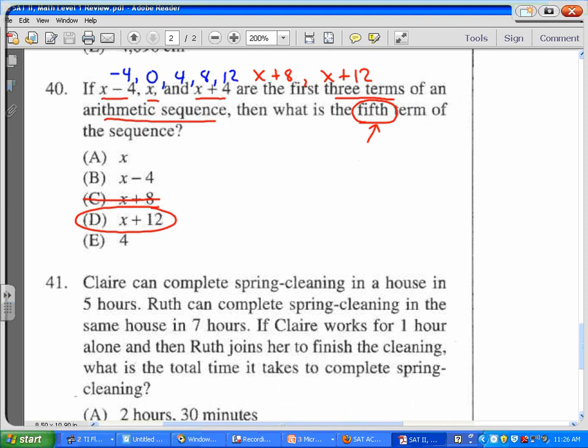and then you have 4, and then 8, and then 12. So if x is 0, 0 plus 12 gives you 12, and that was the fifth term.